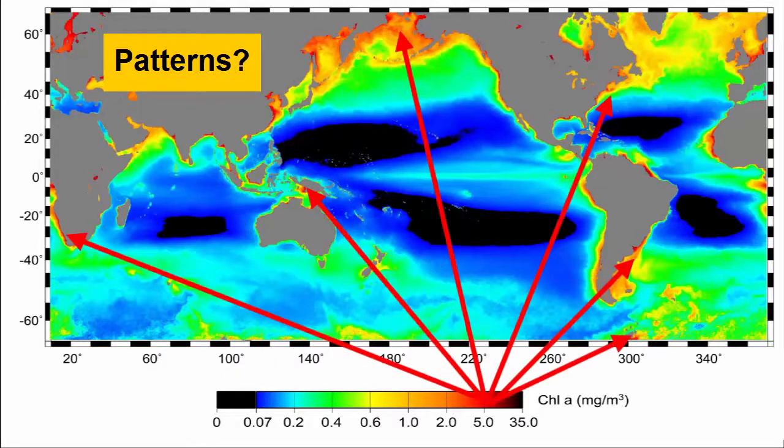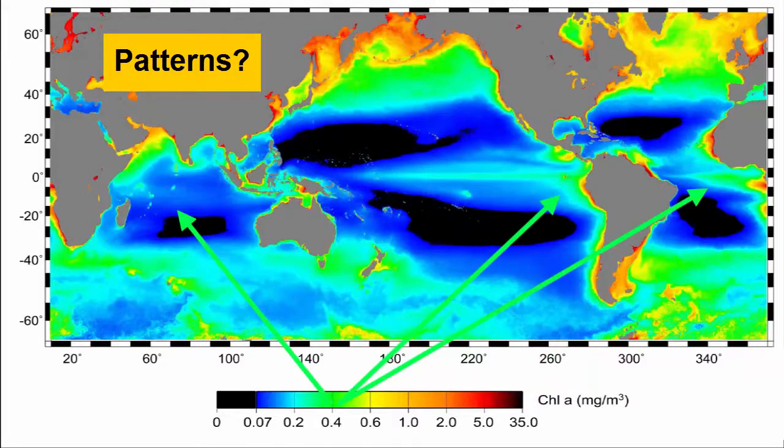We see high chlorophyll values in the Arctic Ocean, Antarctic Ocean, and along all coastlines. We see moderate values in strips along the equator, thicker in the east than in the west.